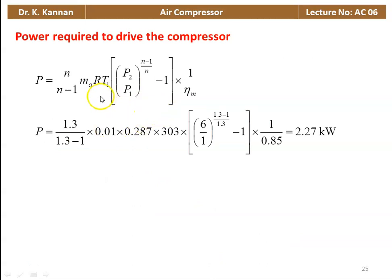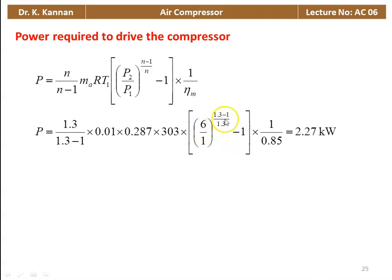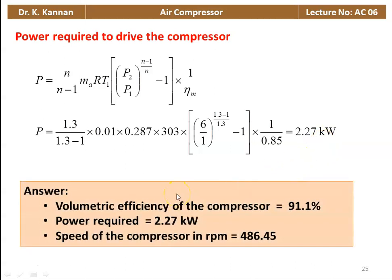Power required to drive the compressor: P equal to n by (n minus 1) into ma into R into T1 into [(P2 by P1) to the power (n minus 1) by n minus 1] into 1 by mechanical efficiency. Substituting: 1.3 by 0.3 into 0.01 into 0.287 into 303 into [(6 by 1) to the power (0.3 by 1.3) minus 1] into 1 by 0.85 equals 2.27 kilowatts. Volumetric efficiency 91.1%, power 2.27 kW, speed 486.45 rpm.